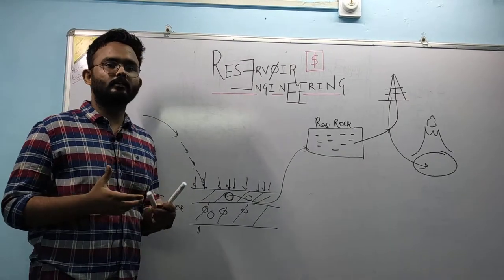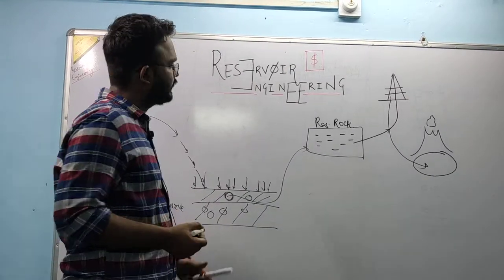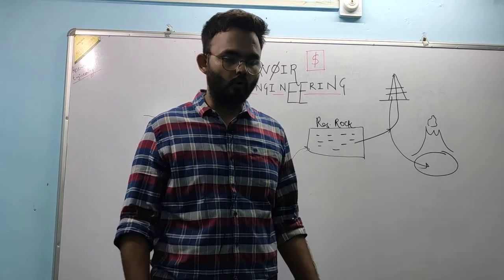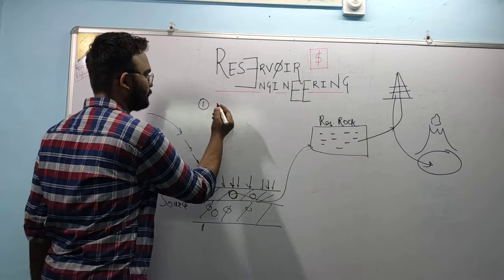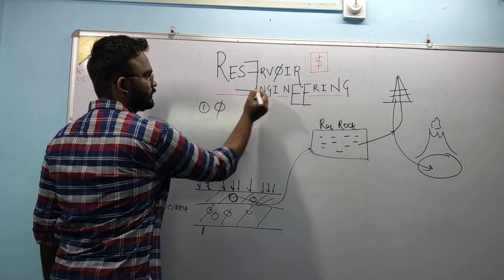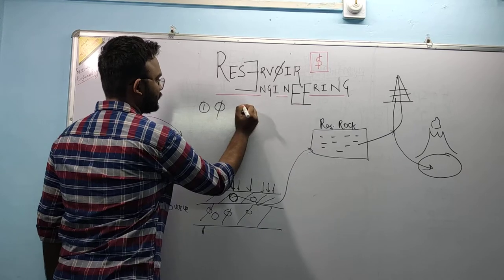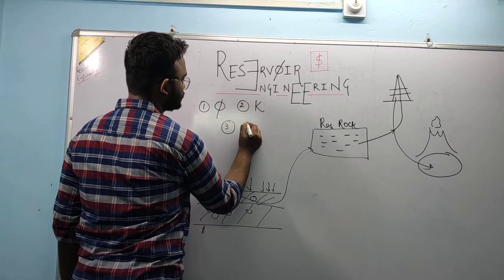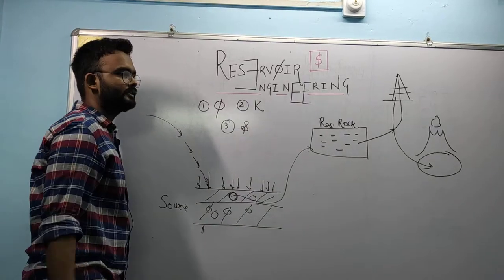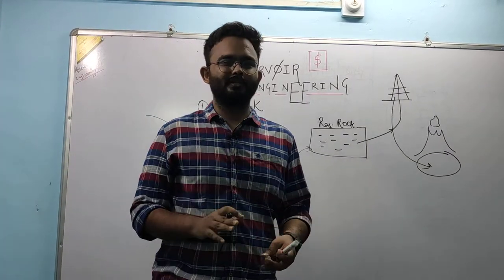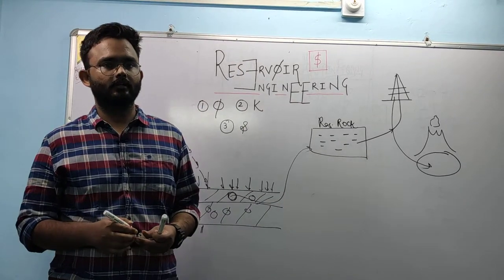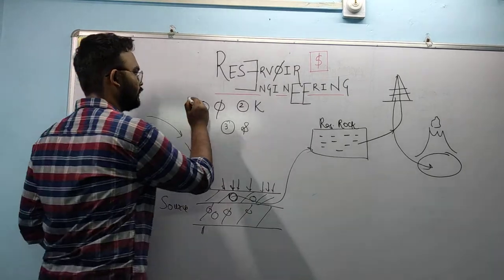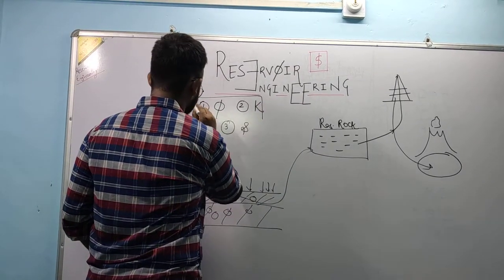Let's get to the technical terms in a non-technical way. The properties that are important to call a rock a reservoir rock include porosity, permeability, and saturation. There are other properties like texture and all — they are important but very theoretical. Let's head straight to the stories about porosity and permeability.